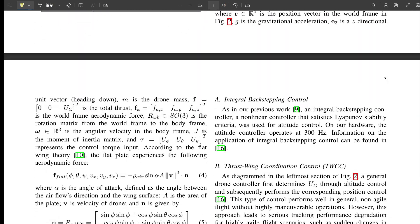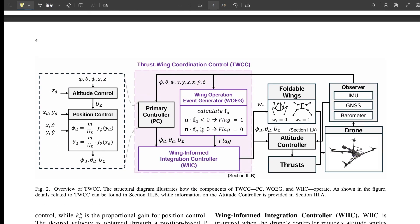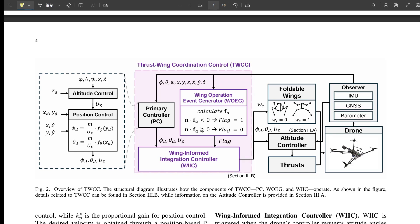So kind of the standard autopilot functions. Essentially, yes. But the key insight is that the PC alone hits limits, especially when you ask for really aggressive moves, maneuvers that need the drone to tilt further than it physically can. Ah, okay. So if the PC wants to tilt 60 degrees, but the drone can only physically manage 45, that's where the next part comes in, the WOEG wing operation event generator.